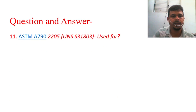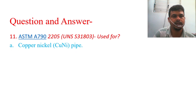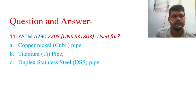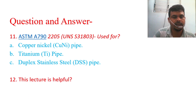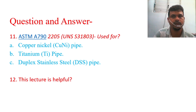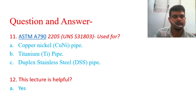Question 11: ASTM A790 2205 UNS S31803 is used for which metallic pipe — copper nickel pipe, titanium pipe, or duplex steel pipe? Then Question 12: I want to ask you — was this lecture helpful? If it was helpful, you must share it with your friends. Answer yes or no.